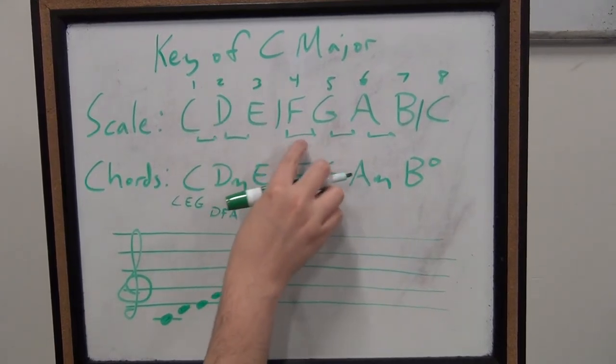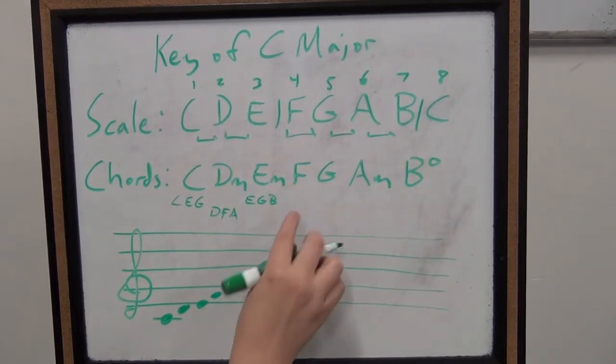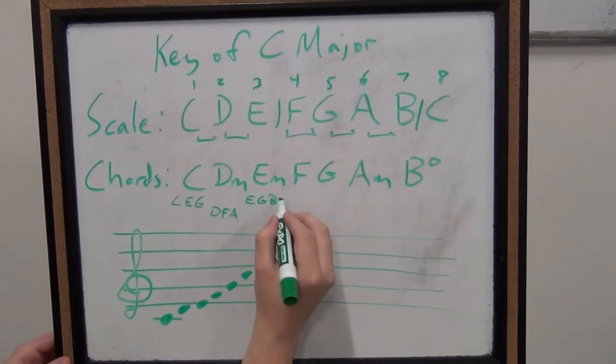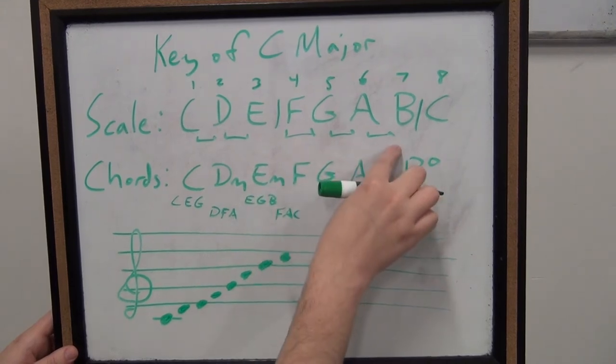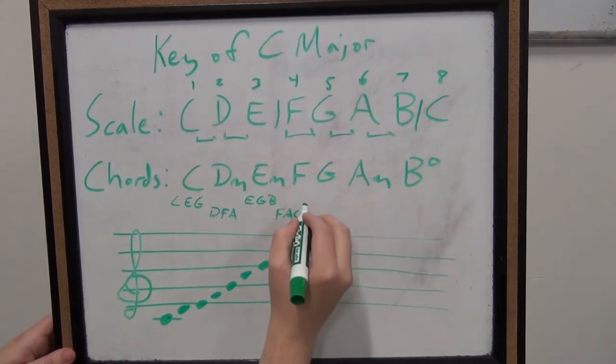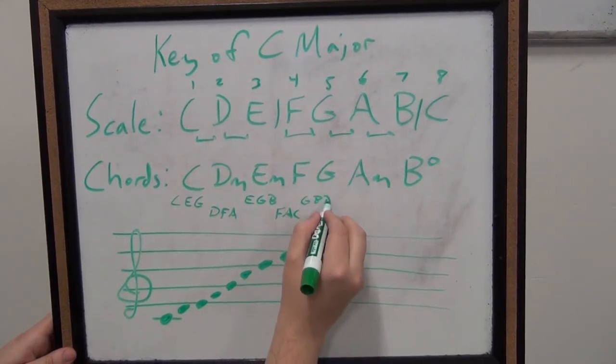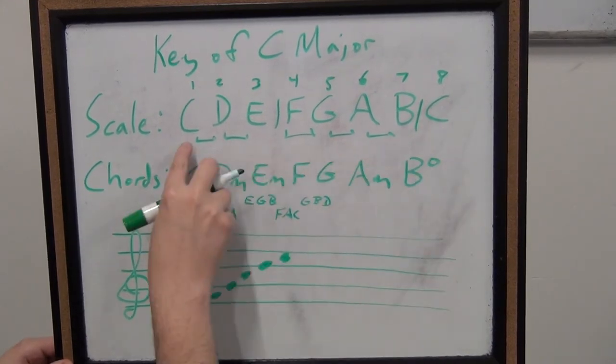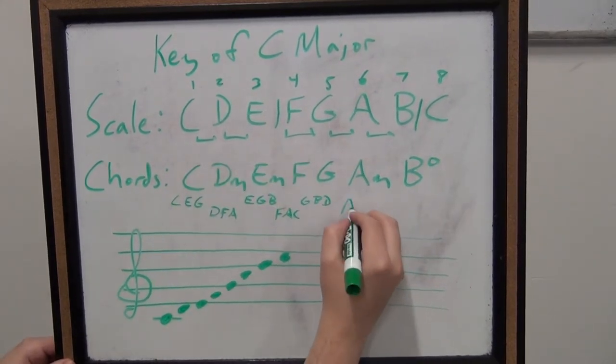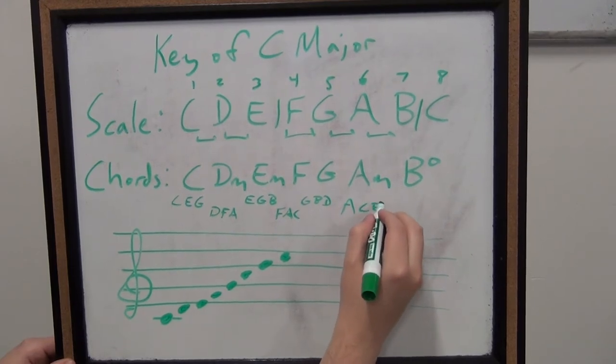F, we have F, A, and C. So there's our F major chord. G, B, if we kept on going, we'd have a D. G, B, D, there's our G major chord. A minor, A, C, E. If we kept on going, we'd have an E up there. That's our A minor.